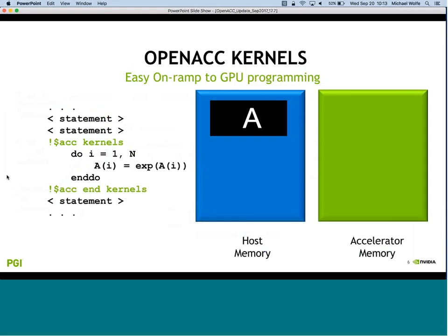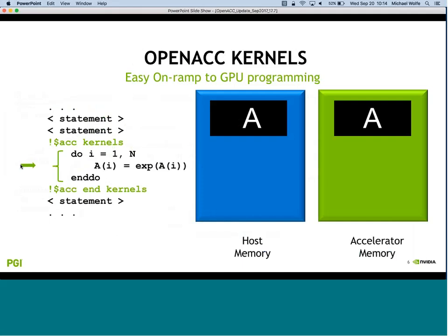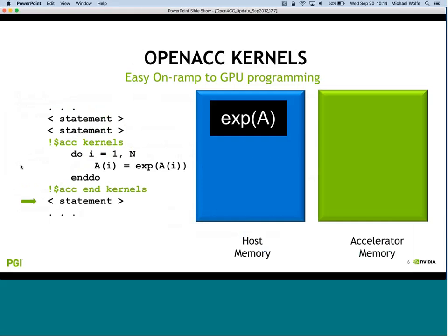Here is a Fortran snippet showing how OpenACC works. You're executing on the host and reach a kernels or parallel construct. The compiler determines it needs to get array A onto the device - allocates memory, copies the data over, launches the kernel to compute the exponential, copies results back, deallocates, and continues on. The connection between the two is a relatively slow PCI Express bus on an x86 system, or NVLink on a Power system, which is several times faster but still not as fast as memory.